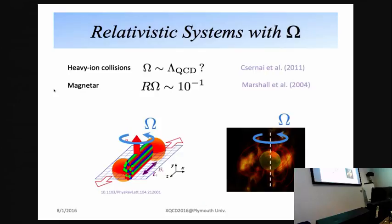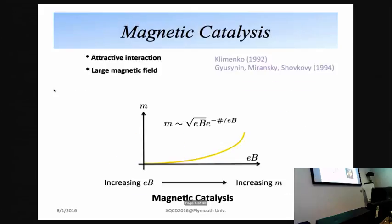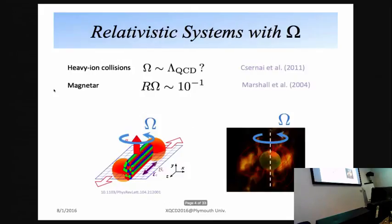More importantly, these two systems — heavy-ion collisions and magnetars — have rapid rotation. This is related to the idea of the chiral vortical effect in heavy-ion collisions. So when discussing these two systems, you have to consider not only the magnetic field but also rotation.